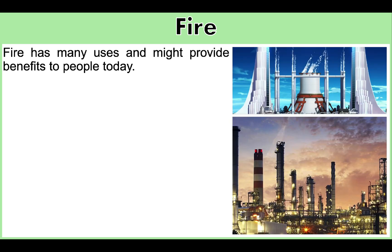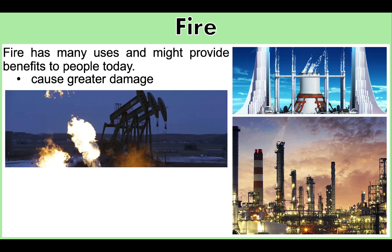The electricity that powers our homes comes from power plants, most of which have fire at the core of production. Power plants use generators that utilize fire for processing. These power plants generate greater amounts of electricity than wind or solar powered sources, but they also cause greater damage to the environment.